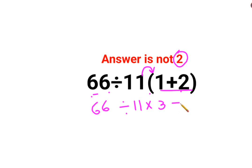So next, at this step, a lot of people made a mistake. This is 66 divided by 11. Instead of doing that, they did 11 into 3, that is 33, and they got the answer as 2. This is incorrect.